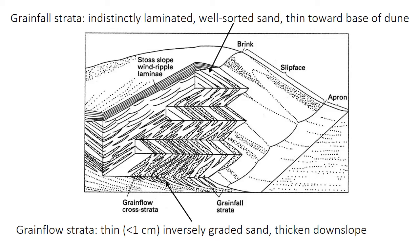Sand dunes are composed of a mixture of grain fall and grain flow beds. Grain flows initiate near the crest and deposit when they reach the toe or base of the dune, meaning grain flow strata become more important and thicker towards the base of the dune. The individual grain flow beds are thin and inversely graded. Grain fall strata, in contrast, form as grains accumulate fairly continuously one by one from saltation. This means grain fall deposits are well-sorted because only a narrow range of grain sizes can be moved by saltation, but the lamination is somewhat indistinct because of the continuous accumulation of particles. Grain fall deposits form pretty much everywhere on the face, but because of the dominance of grain flow at the base, grain fall units tend to thin from the crest towards the base of the dune.